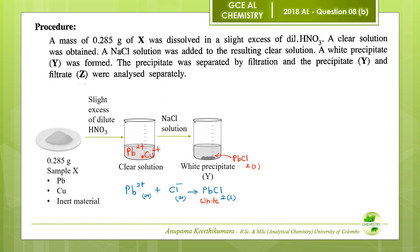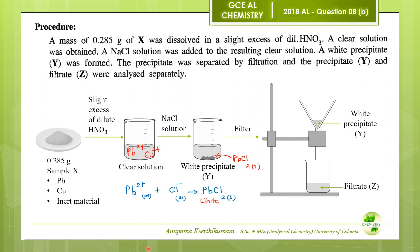When sodium chloride solution was added, the lead²⁺ ions react with chloride ions from sodium chloride to produce lead chloride, which is a white precipitate. Therefore, precipitate Y is lead chloride (PbCl₂). Copper²⁺ ions with Cl⁻ ions would give copper chloride, but copper chloride is a soluble compound, so the white precipitate is definitely PbCl₂. The sample was then filtered.